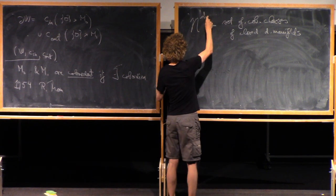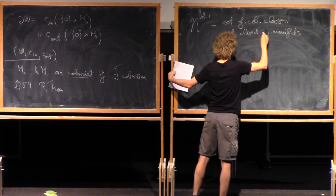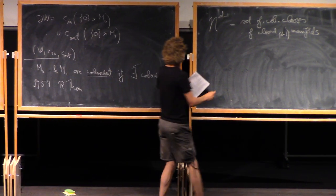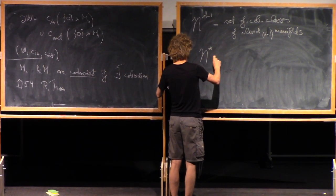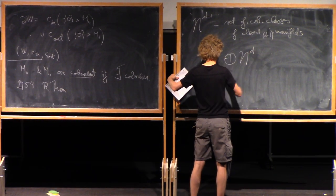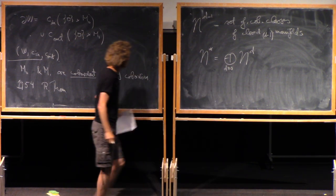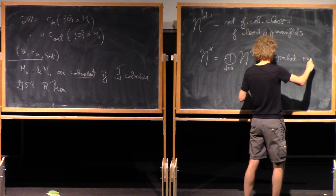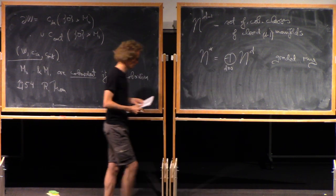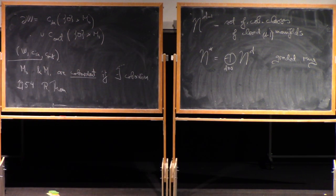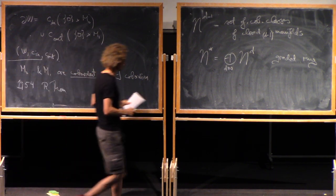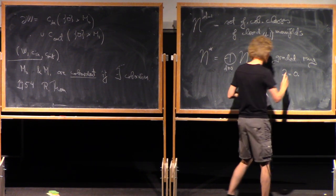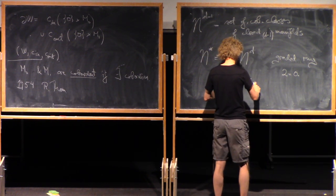Thom defined the notation curly N subscript d, the set of cobordism classes of closed d-manifolds. Maybe my indexing - I'd like d to be the dimension of the cobordism. Then if you take the direct sum of all of those, you get a graded ring.